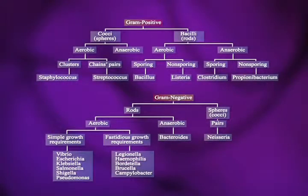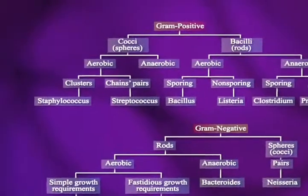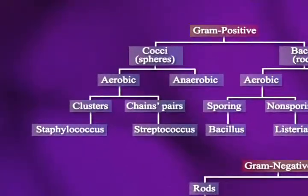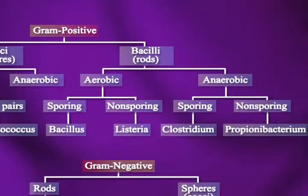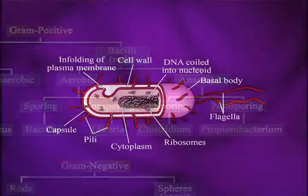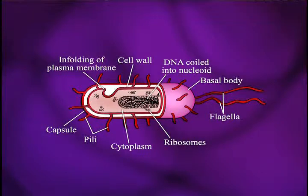The bacteria are generally divided into gram-positive and gram-negative groups, and then we also divide them by shape. They're either cocci, which are spheres, or bacilli, which are rods. This slide is showing you a typical example of a bacillus.